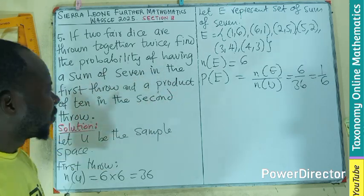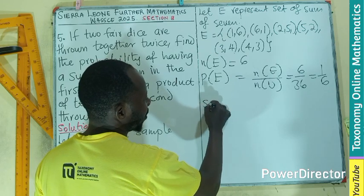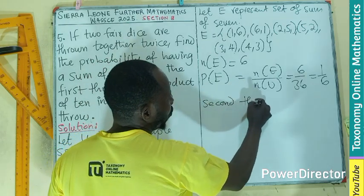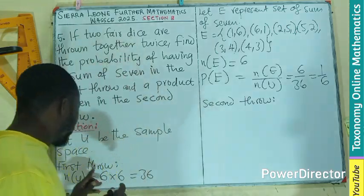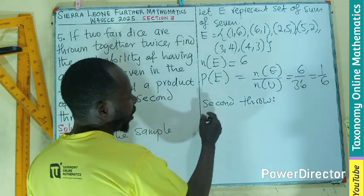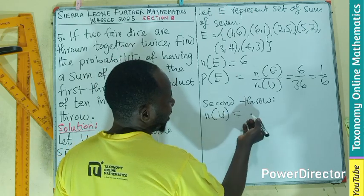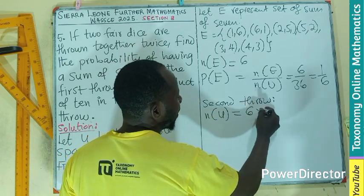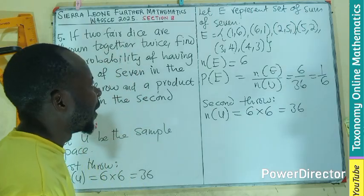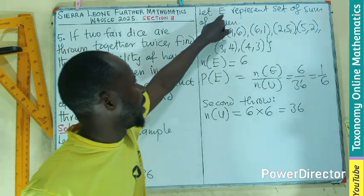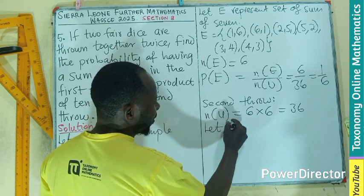Then we go on to the second part, which is looking for the second throw as a product of ten. The second throw, we still have our U being the sample space. So the sample space will still be 6 by 6, which will be 36. Then what are we going to do? Since E is used here, we can use a different variable. So let D...